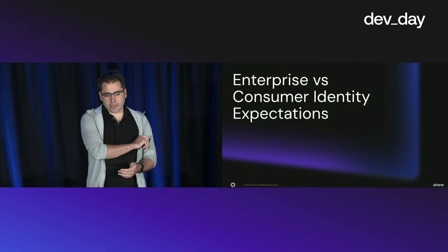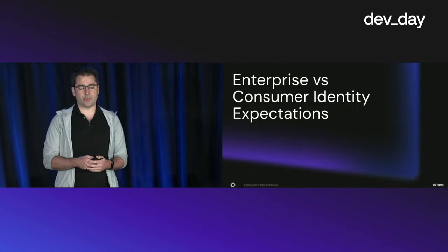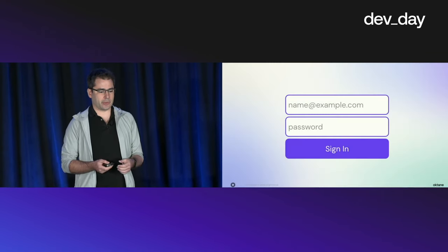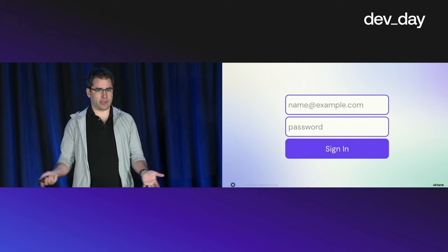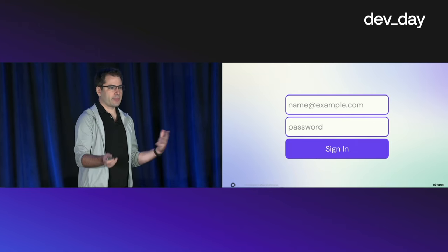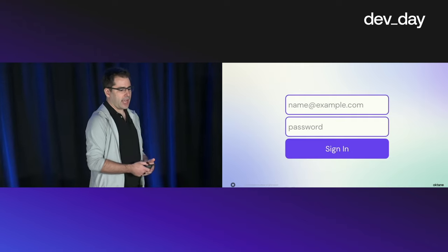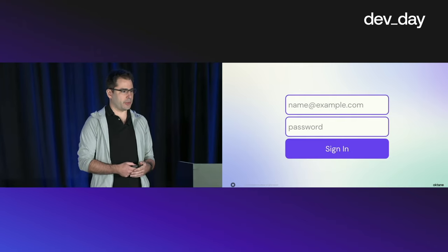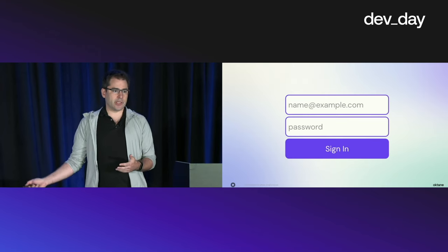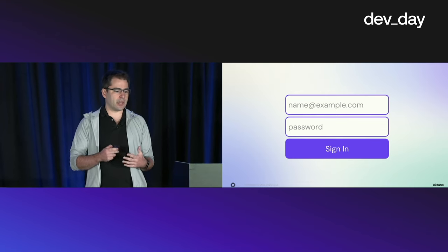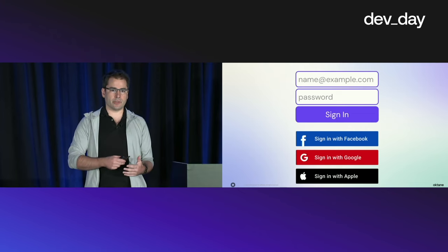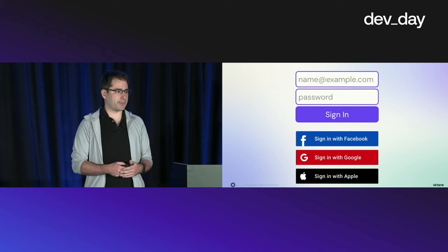Starting with how enterprise companies expect to deal with problems. You are probably familiar with a typical login box with a username and password. This is a very typical way that people start building applications, and it can get you pretty far when you're building a SaaS app. You may also quickly realize that you need to support other social identity providers in order to reduce the friction of onboarding or just getting users to come back into your application.